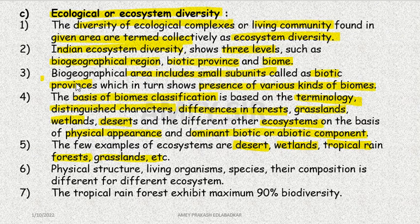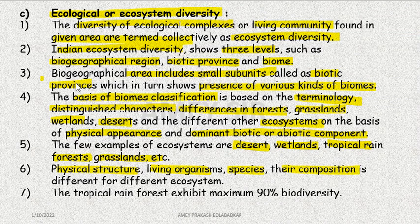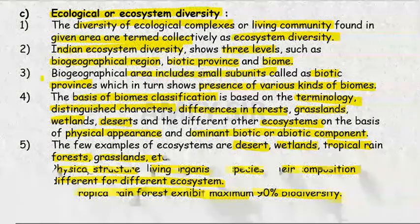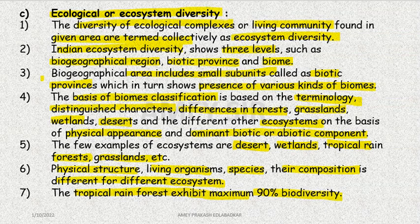Physical structure, living organisms, species, their composition — these are all different for different ecosystems. Among them, tropical rainforest indicates maximum biodiversity, which is almost 90 percent.